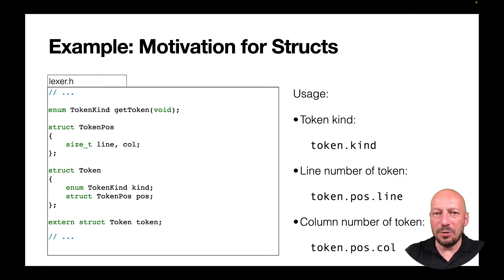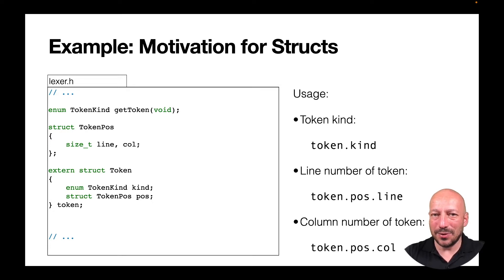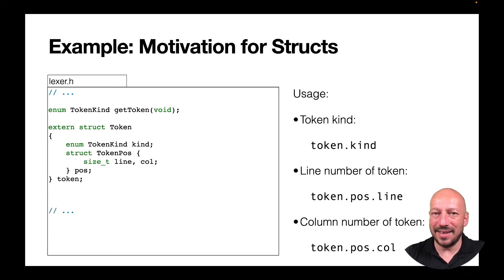If you want to write things more compactly, you can declare a new data type struct and a variable of that type in one sweep. For example, we can declare struct token and a variable of this type together. Similarly, for the member pos, we can insert the declaration of struct token_pos inside the declaration of struct token. It's up to you whether you prefer this or separating the struct declaration from the variable declaration.